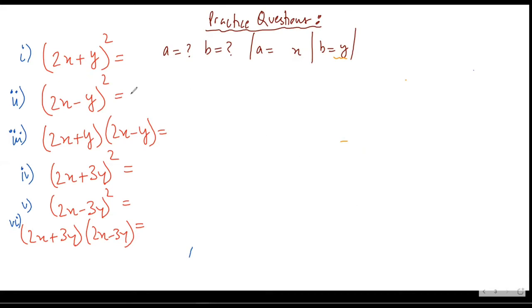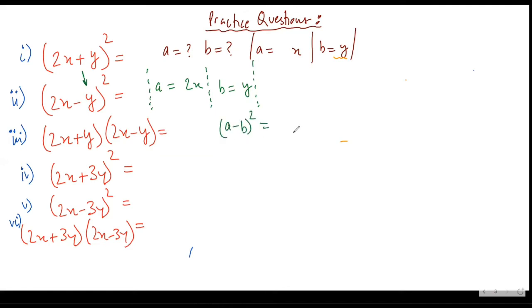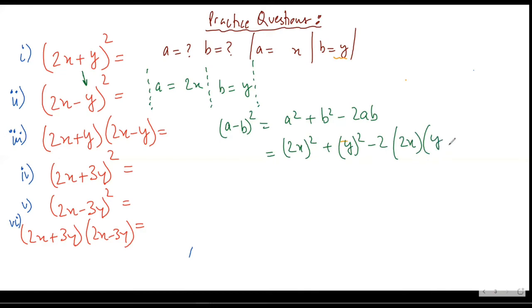In the second question, my a is 2x and my b is y. Note that your b is not minus y, but your b is y, because you are applying the formula (a - b)² = a² + b² - 2ab. So a² would be (2x)², your b is y, minus twice of a into b. This would be equal to 4x² + y² - 4xy.